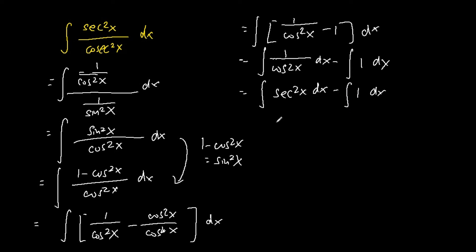And then we perform our integration. The integration of sec square x dx is tangent x, while the integration of 1 is just basically x. And this will be the final answer to the integration of sec square x over cosec square x dx.